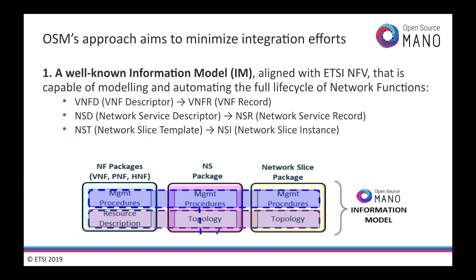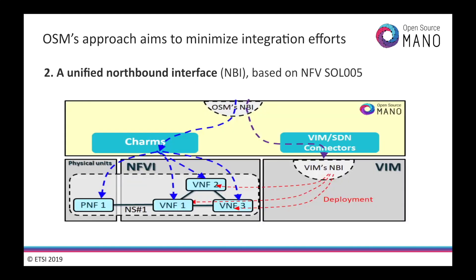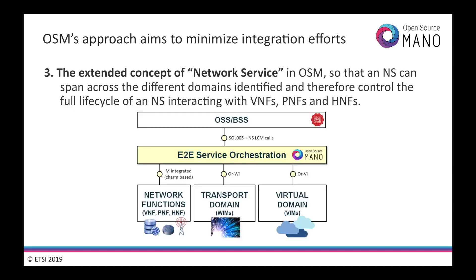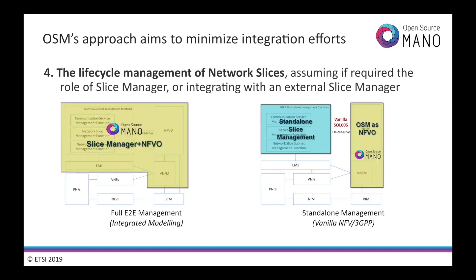OSM aims to minimize integration efforts by, first, implementing a well-known rich information model that allows for enhanced automation of VNFs, network services and network slices. Second, it provides a standard but extended Northbound interface that lets operators or OSS systems launch network services that are instantiated and then automatically provisioned. Third, it extends the concept of network service beyond the data center and throughout transport domains in order to implement virtual, physical or hybrid network functions in an end-to-end fashion across multiple data centers and including their interconnections. OSM is also capable of managing network slices, either by itself or by integrating its Northbound interface to a standalone slice manager.